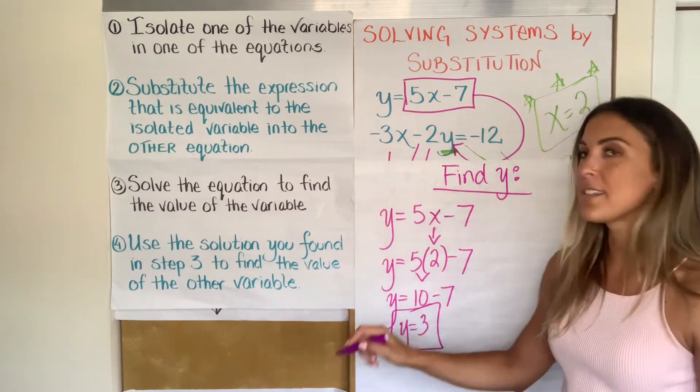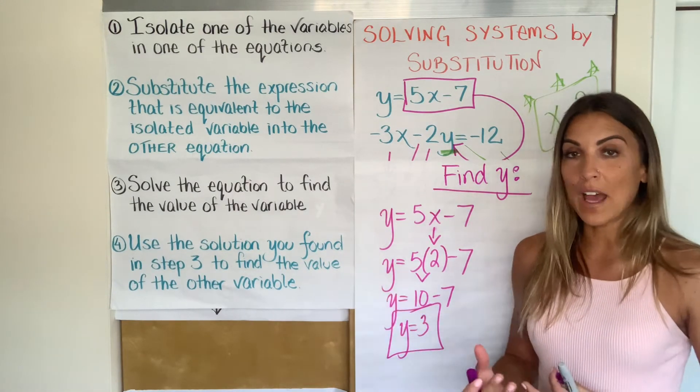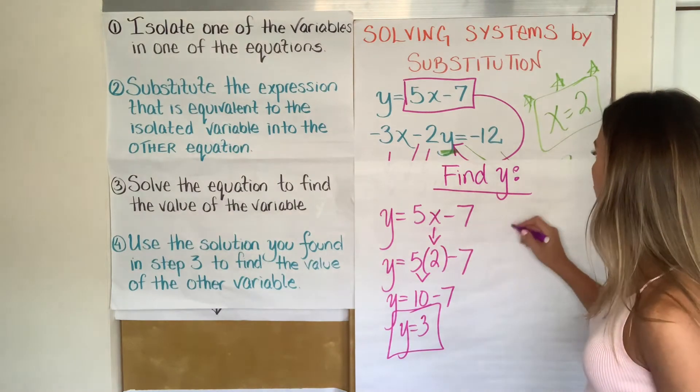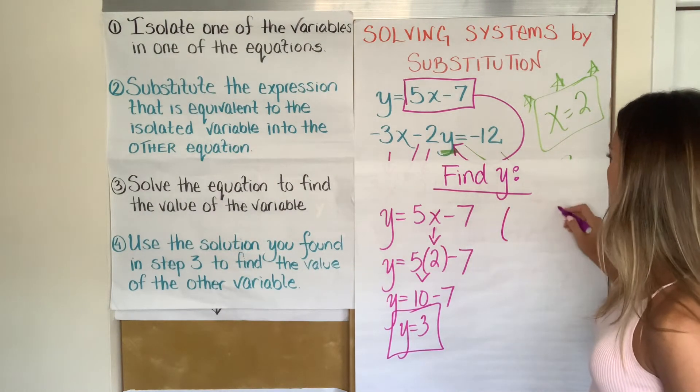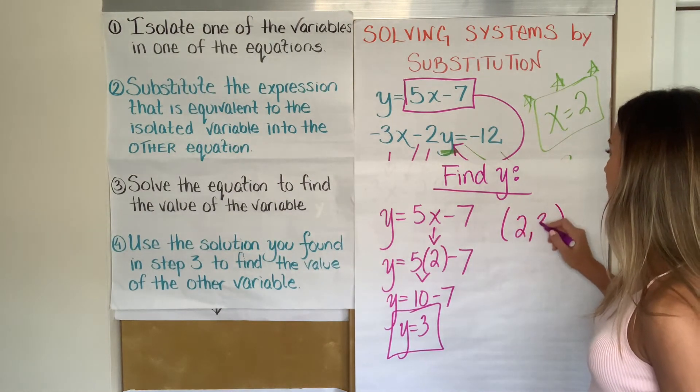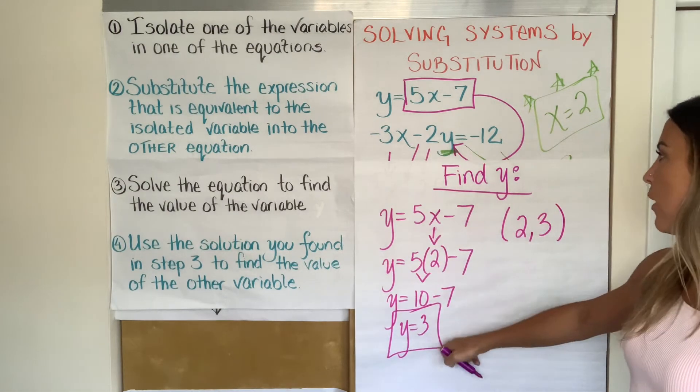Y equals 3. Now I've got the second component of my solution. I'm going to put it together. I like to write it as an ordered pair when you're dealing with the X's and Y's. So my solution is 2 comma 3 or X is 2 and Y is 3.